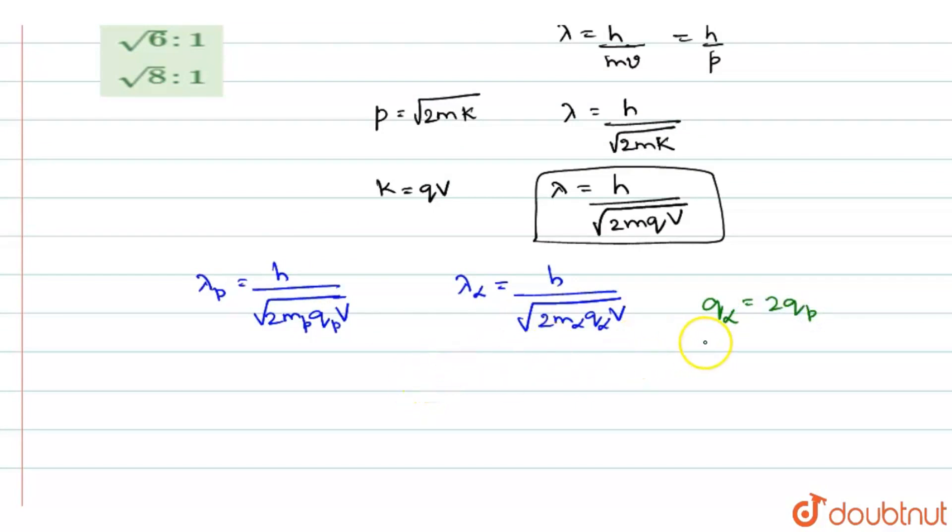And the mass of it, m alpha will be equal to 4mp, because alpha particle means it is 2He4, and this proton is p. So you will write this relation m alpha will be equal to 4mp.